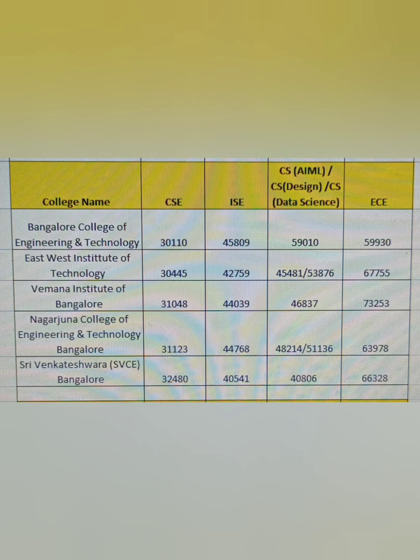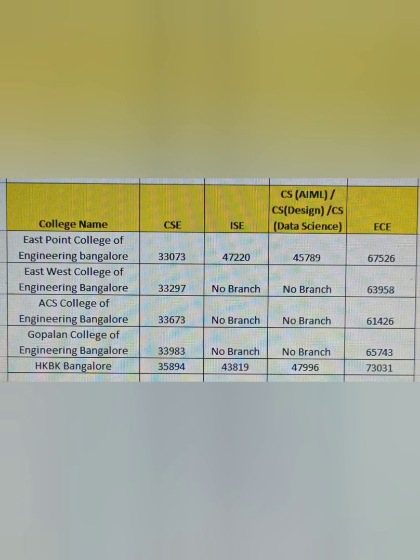In ECE, you can get Vemana up to 73,000, and other colleges in the 50,000–60,000 range. If you're seeing this part of the sheet, please consider other branches too, since CSE isn't changing much. East Point College of Engineering and East-West College of Engineering both close around 33,000 for CSE. ACS, Gopalan, and HKBK close around 33,000–35,000. Many colleges here don't have ISE listed. Information science is available around 47,000–48,000, CSE specializations under 50,000, and ECE up to 73,000.